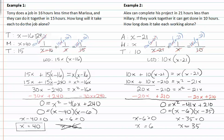We need to make sure our solutions make sense — one usually won't. If we plug in six for x, Hillary works six hours, but then Alex would be doing a job in negative time, which doesn't make sense. So we won't use six. With thirty-five, if that's how long it takes Hillary to do the job, then thirty-five minus twenty-one is the amount of time it takes Alex. So Hillary takes thirty-five hours and Alex takes fourteen hours.